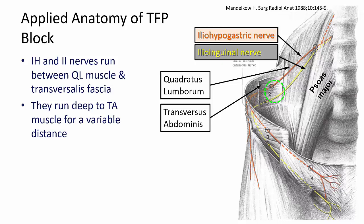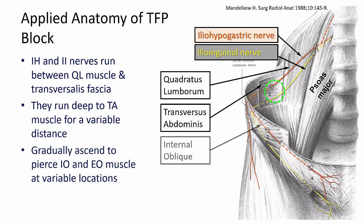Anterior to the iliac crest, the nerves ascend gradually, piercing first internal oblique and then external oblique. However, the location at which this occurs varies widely between individuals.